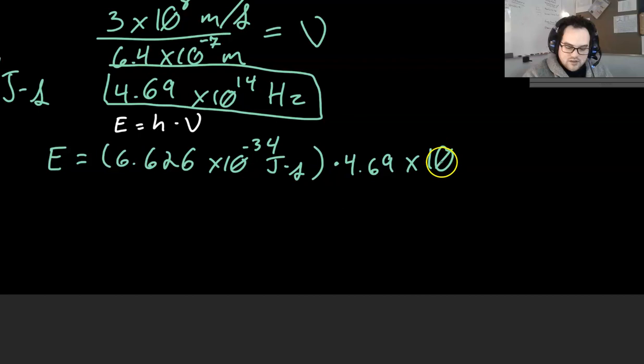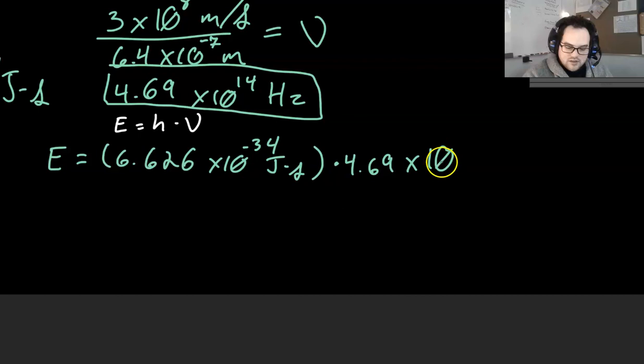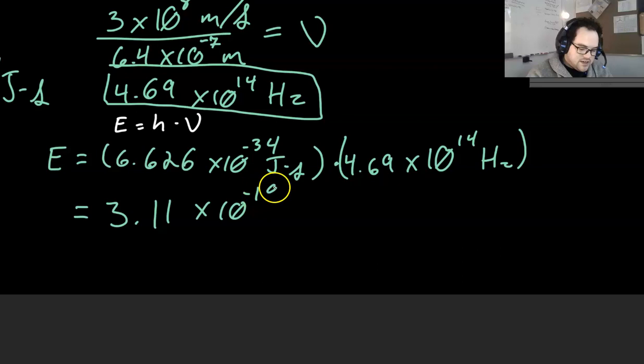4.69 times 10 to the 14th hertz. So when you calculate all of that out you're going to end up with 3.11 times 10 to the negative 19th joules.